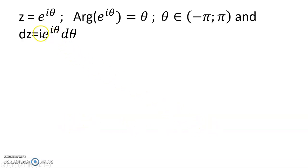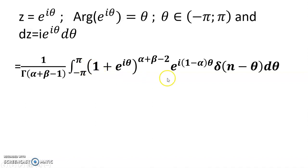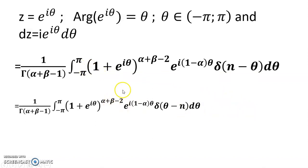There is a small mistake here — 1 over 2 pi is not included. We use z equals e to the power i theta, where r equals e to the power i theta, and theta belongs to minus pi to 2 pi, and dz equals e to the power i theta d theta. So putting z equals e to the power i theta, we get this value. The 1 over 2 pi is not included.